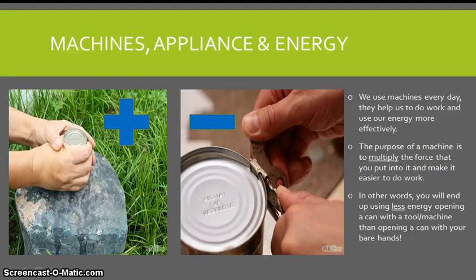Now if we have a look, we use machines every day. They help us to do work and use our energy more effectively. The purpose of a machine is to multiply the force that you put into it and make it easier to do the work. In other words, you'll end up using less energy opening a can with a tool or machine than opening a can with your bare hands. If I was going to try and open it with my bare hands, it would take me a long time, and I would have to use lots of energy. But if I use a tin opener, I barely feel any energy being used up.